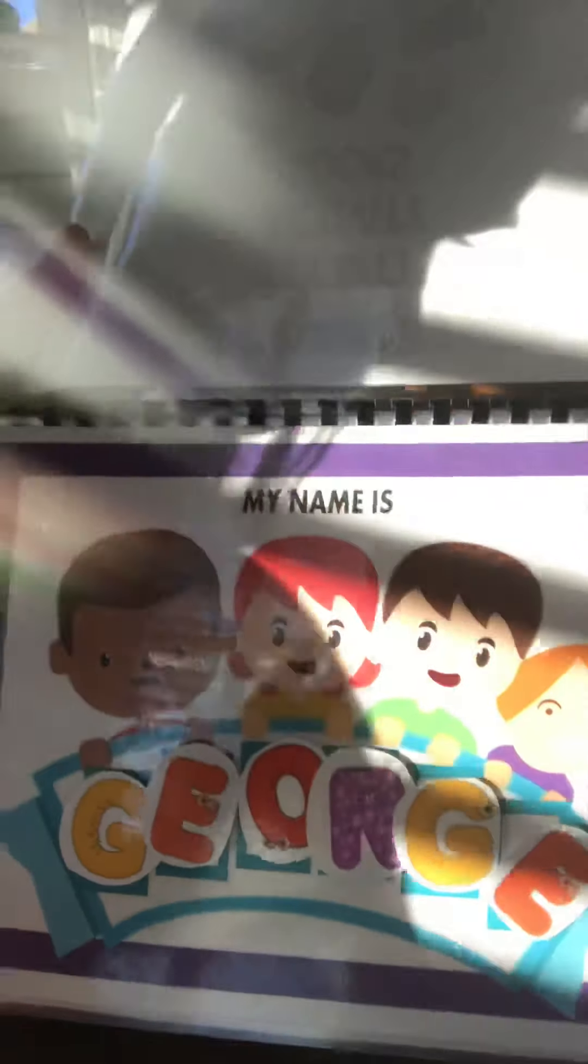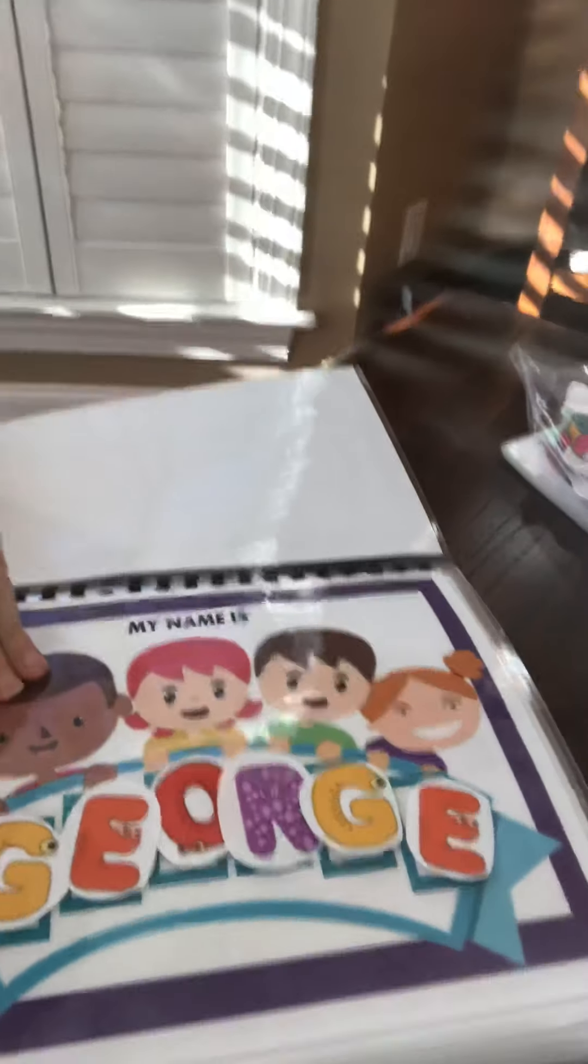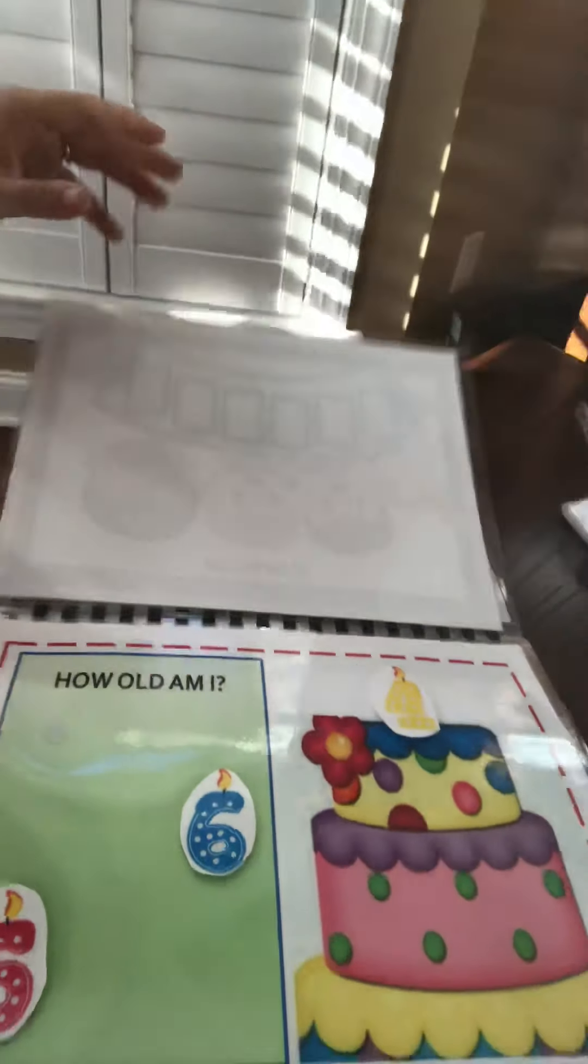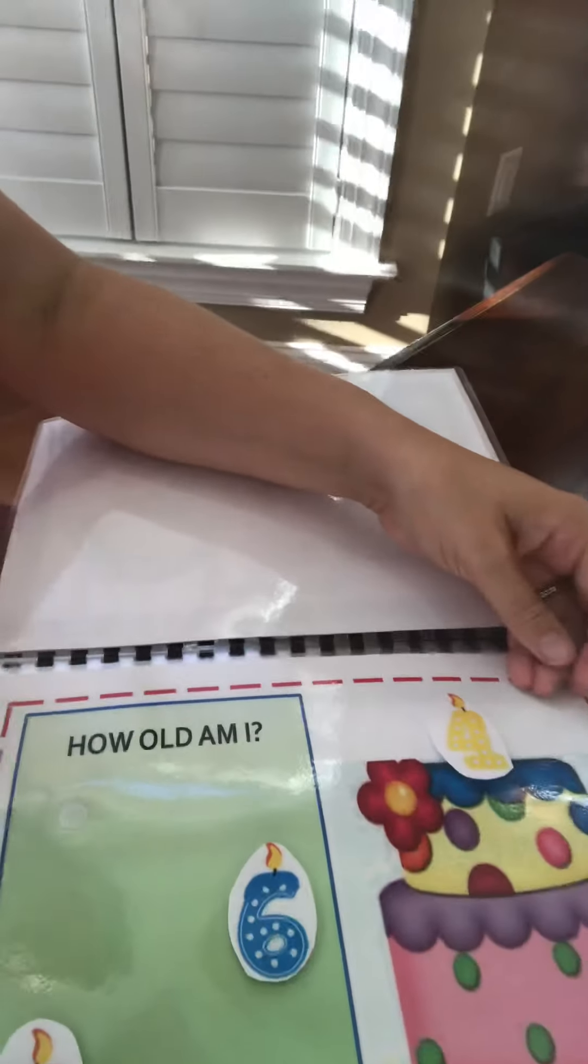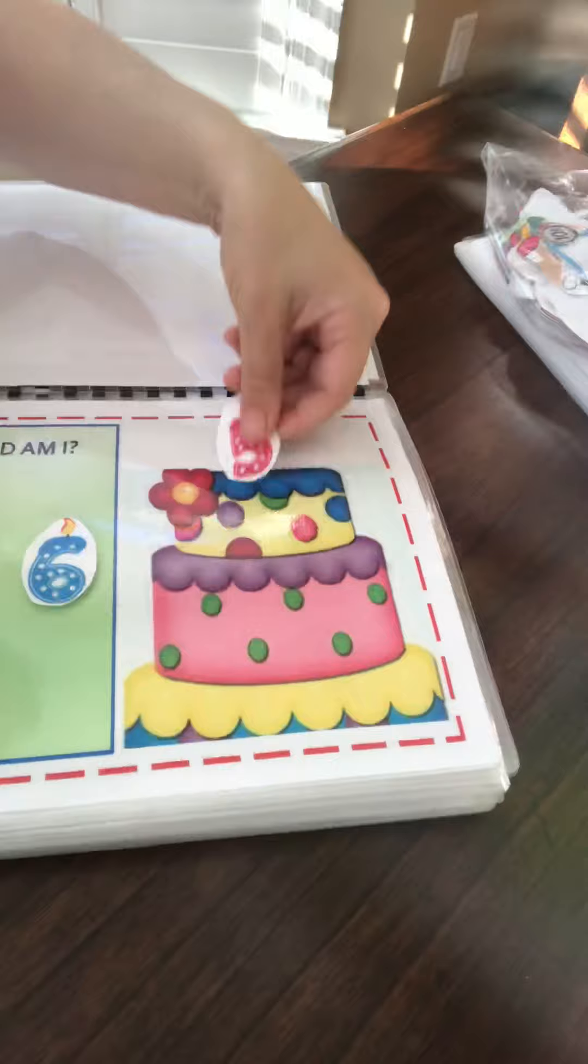So, the first page is his name, and these are all Velcro, so he can work on his name. The second is his age, so right now he's four, but in November, of course, he's going to be five years old.